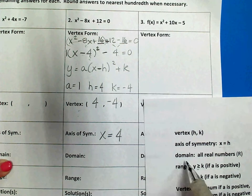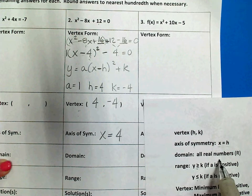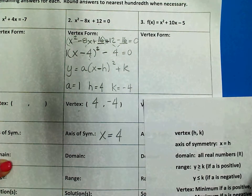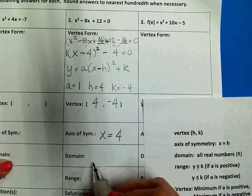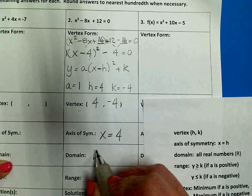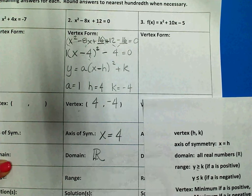Your domain is all real numbers in Algebra 1 because we only deal with parabolas that open upward or downward. So, for my domain, all real numbers—you can write it out if you prefer.